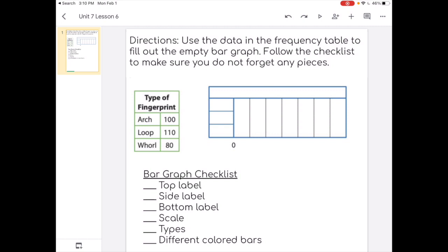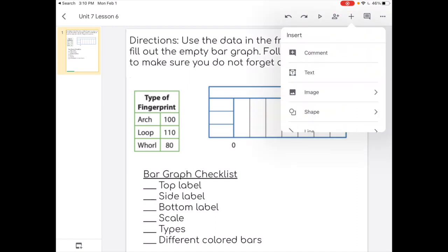So one thing I want to point out is that everything we need to add is going to be on the plus sign. So when you click the plus sign, you can add a text box, you can add a shape. Those are the things that we're going to be adding.